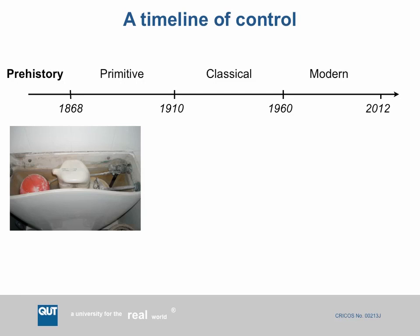A really good example of a control system from prehistory is the float regulator — you've got one of these in your toilet. It's not particularly clever but it's very functional: it's simply a float on a lever connected to a valve. It's a control system, a regulator, that ensures the water level rises to a predetermined level and then stops. Very simple, and there must be billions of them on the planet today.